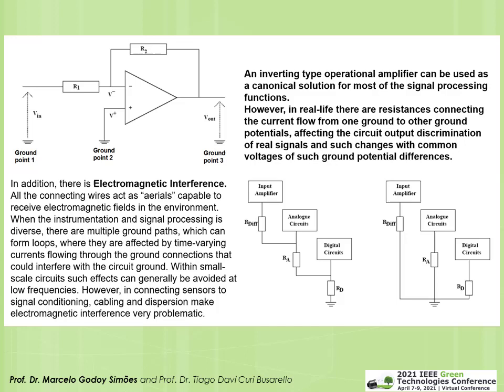Here we see a typical inverting-type operational amplifier. The output has a resistor (or network) connecting back to the negative input — this is negative feedback. There is also another resistor R1 connecting the input to that node. It is important, when analyzing an op-amp, to clearly identify whether we have negative feedback (as in this circuit) or positive feedback. Negative feedback is the basis for inverting amplifiers, non-inverting amplifiers, and filters.